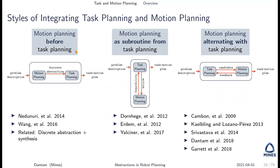There are three broad styles of integrating task and motion planning. First, you can do motion planning first and then task planning — find a discrete abstraction or roadmap, then do task planning through it. This gives a correct approach: every plan in that roadmap should be feasible. This is related to discrete abstraction and synthesis approaches from controls theory, where you find a discrete abstraction then do synthesis using it.